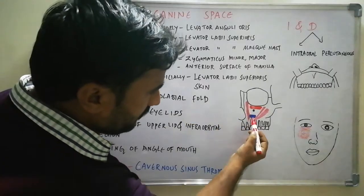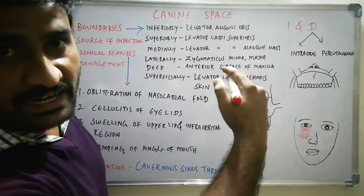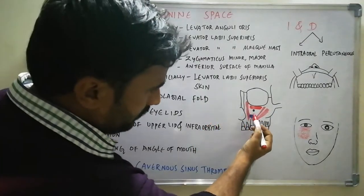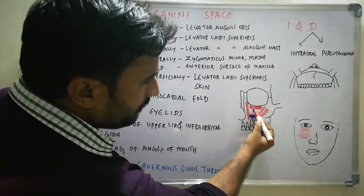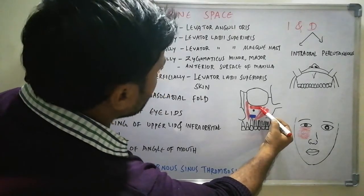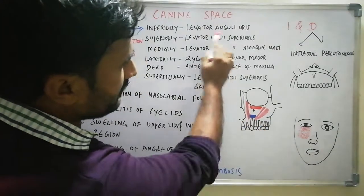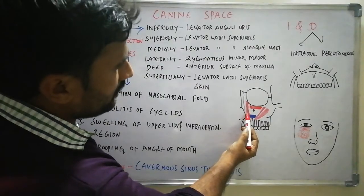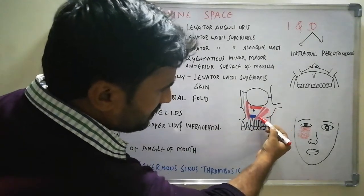The inferior boundary is the levator anguli oris. When the perforation is above the levator anguli oris muscle attachment, involvement of the canine space occurs. This levator anguli oris muscle originates just inferior to the infraorbital foramen. Inferiorly we have levator anguli oris and superiorly we have levator labii superioris. Medially we have levator labii superioris alaeque nasi and laterally we have zygomaticus minor and major muscles.